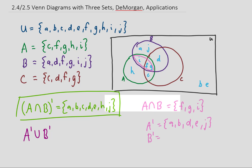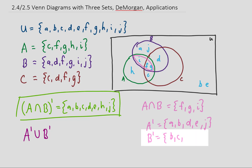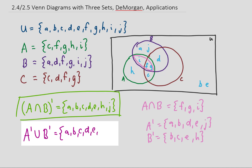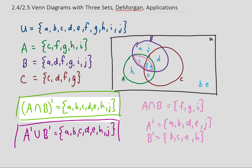If we want to find B complement, we write down everything that's not in set B — that looks like B, C, E, and H. Now if we want the union of these two sets, that includes all elements that are in either set or both. We just write down all the letters we see: A, B, C, D, E, H, and J. And it turns out that A intersected with B complement gave us the same result as A complement unioned with B complement.